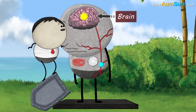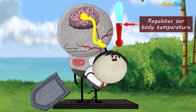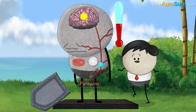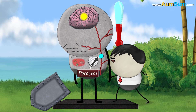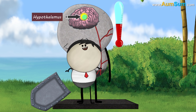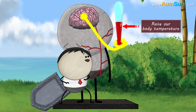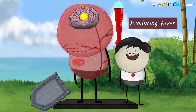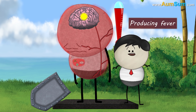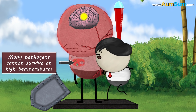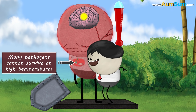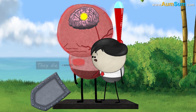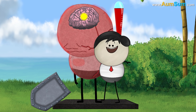The hypothalamus, which is a small part of our brain, regulates our body temperature. However, when these pyrogens reach the hypothalamus, it starts to raise our body temperature, thus producing fever. One of the reasons for producing this fever is that many pathogens cannot survive at high temperatures — thus they die and we remain safe.